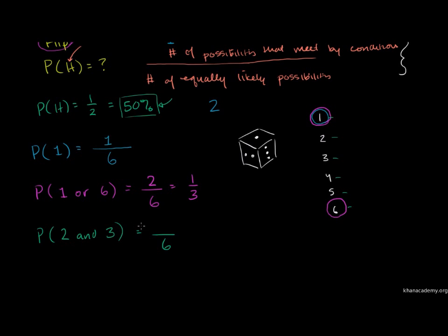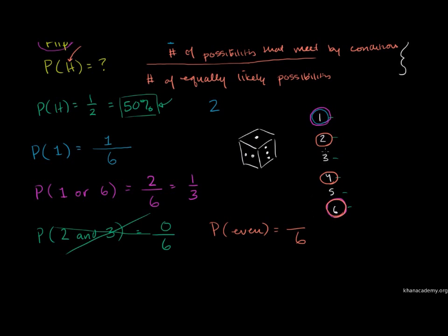Getting 1 or 6 are mutually exclusive events, giving 2 by 6. There are 3 even numbers on a dice, so 3 out of 6 gives the probability of getting an even number. And 3 by 6 simplifies to 1 half.